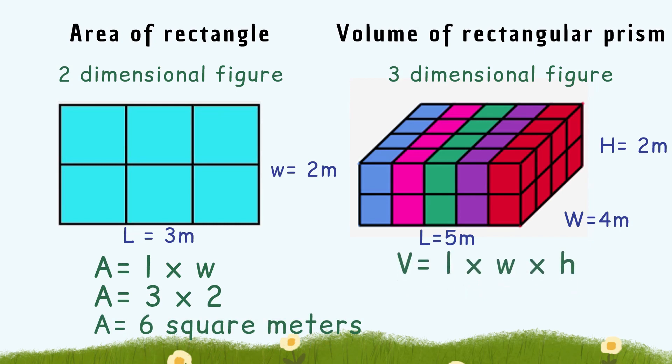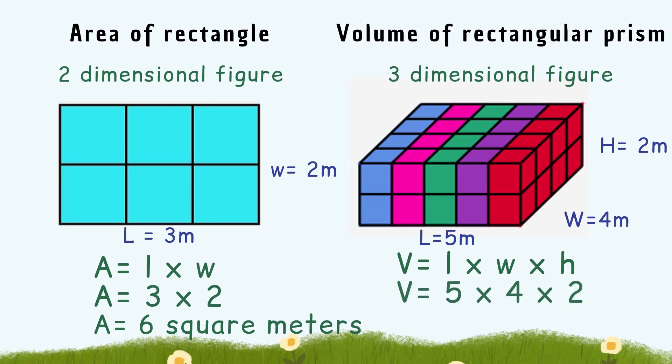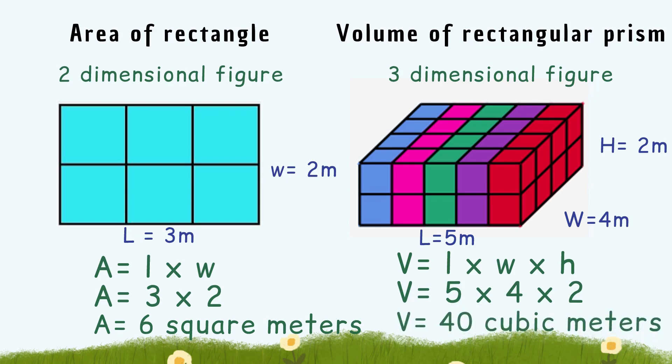For the volume of a rectangular prism, we have a length of five meters, a width of four meters, and a height of two meters. Using the formula length times width times height, the volume equals five times four times two, so we get forty cubic meters.